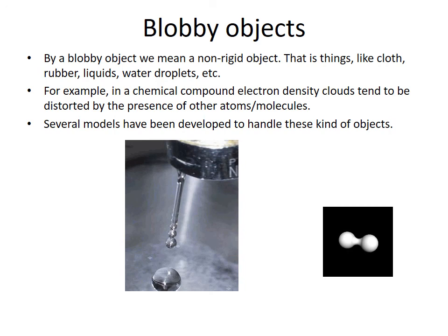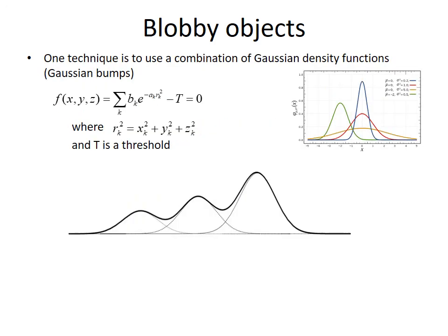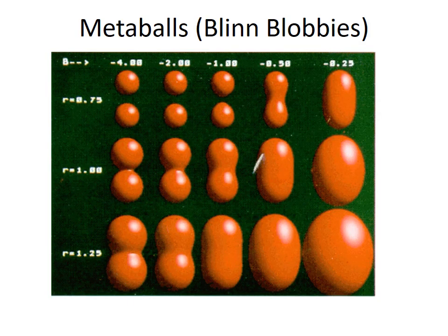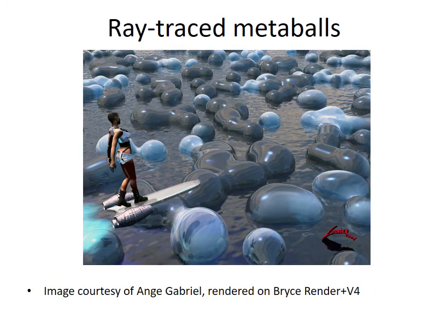There are several ways to define a geometry of such objects. One technique is to use a combination of gaussian density functions or gaussian bumps. Metaballs or bling blobbies are shown in this slide. At the end we wanted to show you how blobby objects can be used in art. Thank you for the attention.